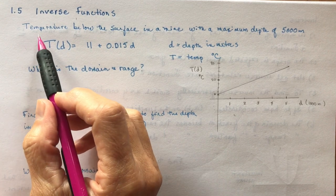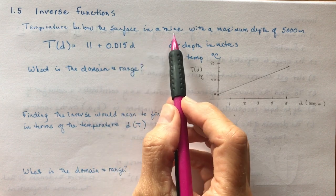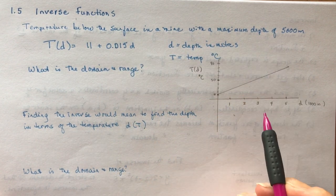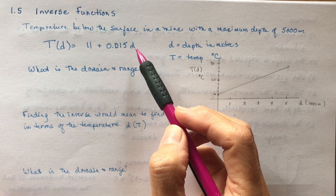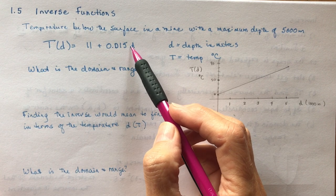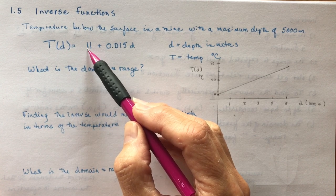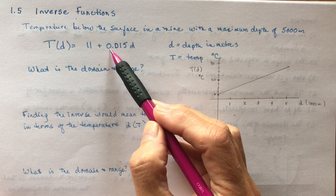Let's say we're given an equation where it is the temperature below the surface in a mine with a maximum depth of 5,000 meters, and here's the equation that they give you. You should recognize that the temperature at a depth of zero would be 11 degrees. So this is just a linear equation, and this is your slope.